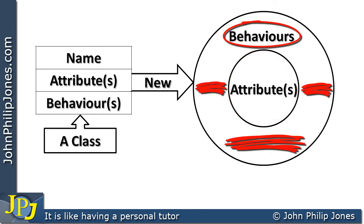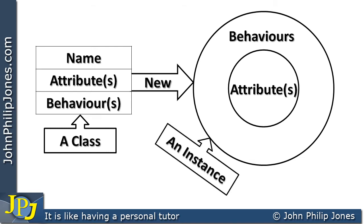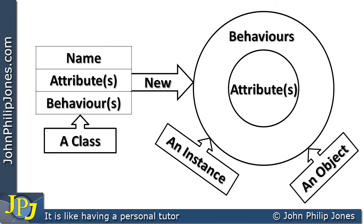In the centre, which we would mark private — and we'll talk about that a little bit later — we would typically have the attributes that were defined in the class. The behaviour area was also defined in the class, but it is when you have the object, when the object comes into existence, that you can use the behaviours and change the attributes. What we have here is an instance of a class, or we also call it an object of the class.